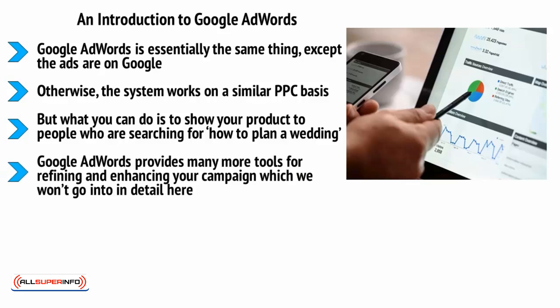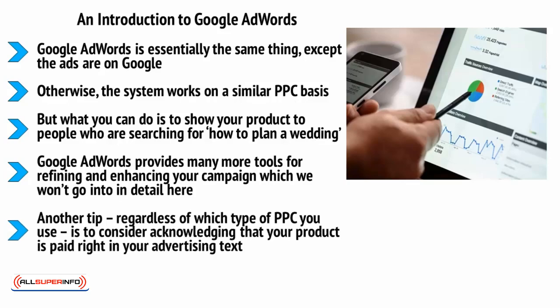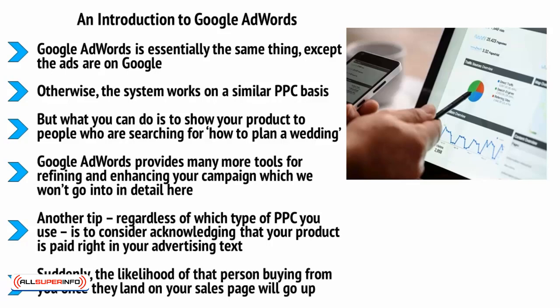Google AdWords provides many more tools for refining and enhancing your campaign. One example is the option to use negative keywords — terms that exclude people from seeing your ads. For example, you can exclude the term 'free,' as those people are unlikely to be willing to pay for your products. Another tip, regardless of which type of PPC you use, is to consider acknowledging that your product is paid right in your advertising text. You can even include the price by saying '$30 e-book on wedding planning,' preventing people from clicking unless they're willing to pay that much, which significantly improves your conversion rate.